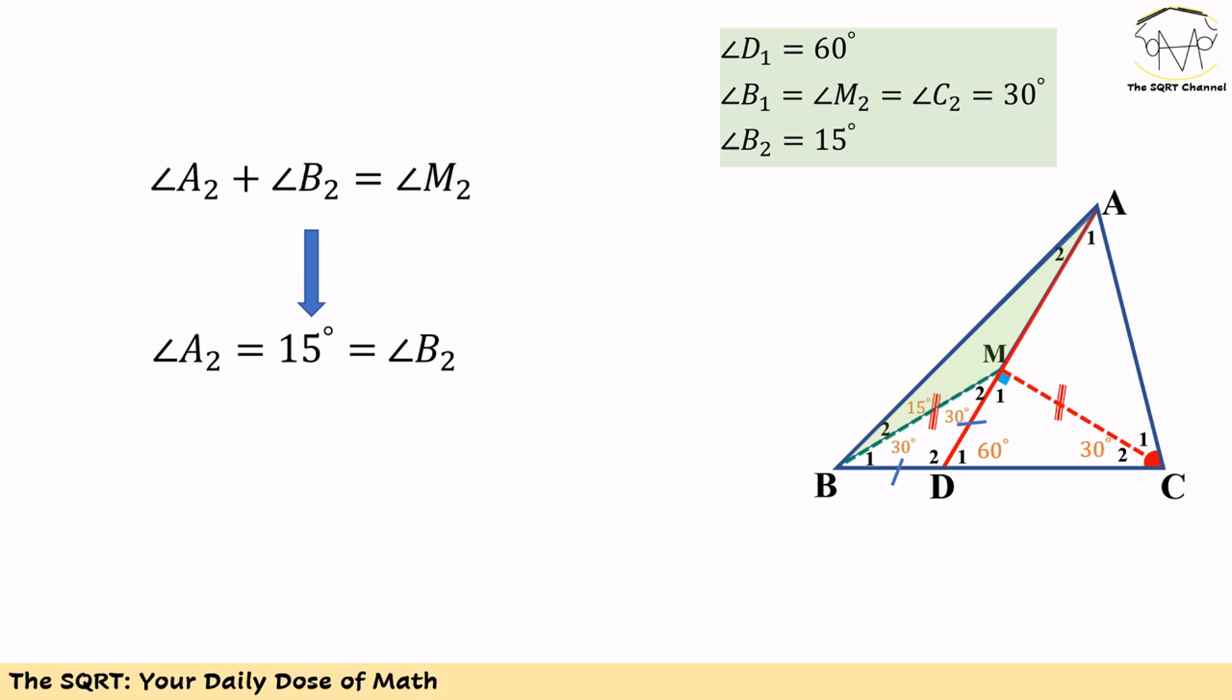And we know M2 equals 30 degrees, so A2 equals 15 degrees as well. So in the same triangle AMB, we have two angles A2 and B2 both equal. This results in AM equals BM.